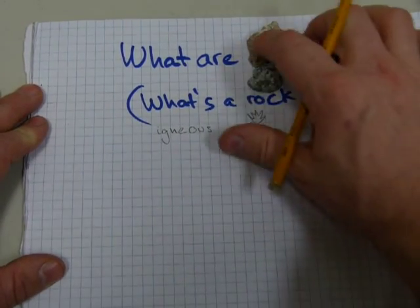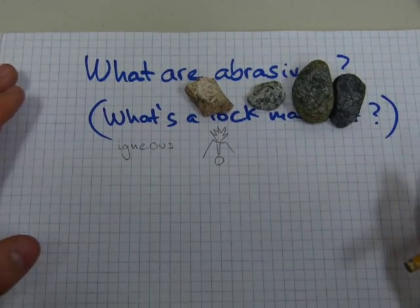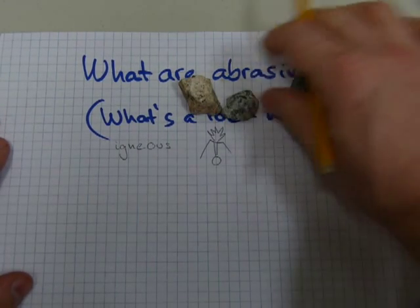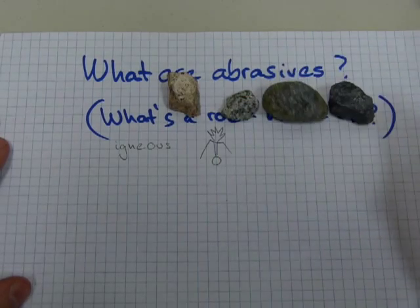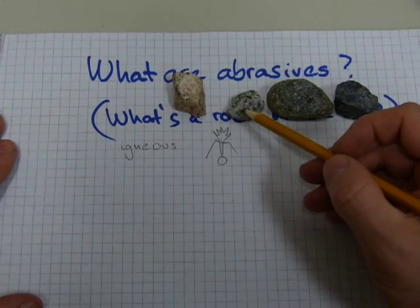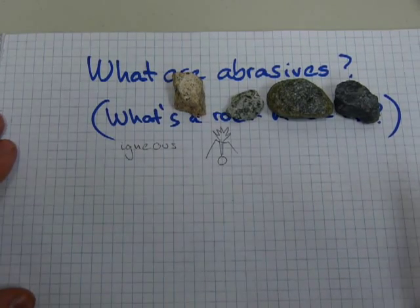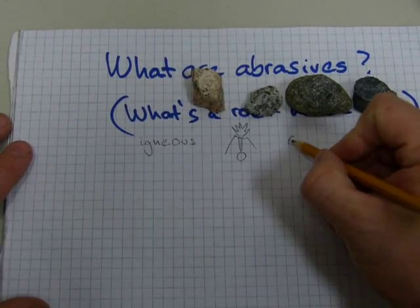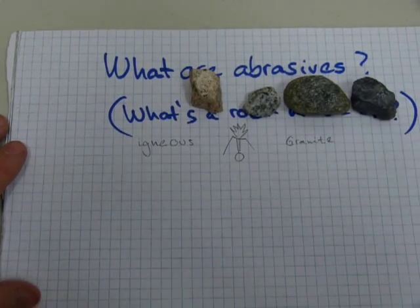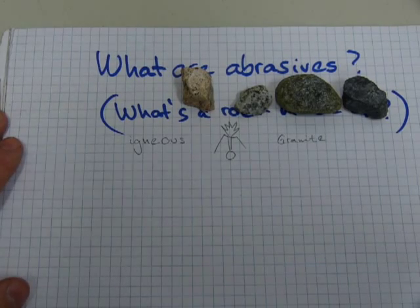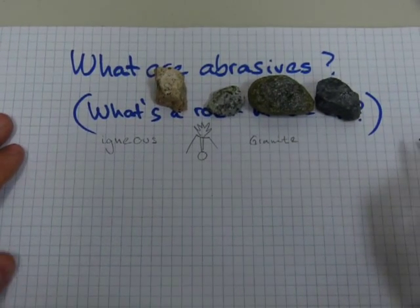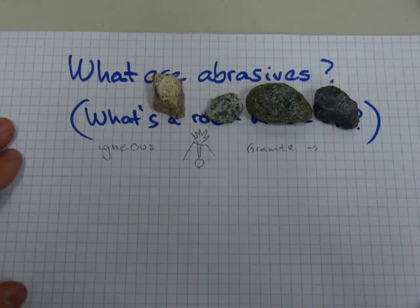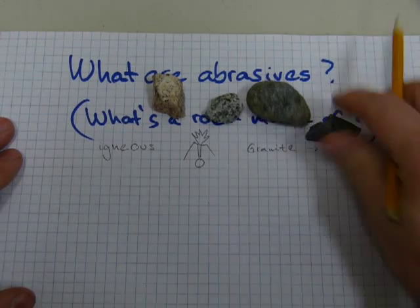As the lava solidifies it forms material with darker stuff and lighter stuff. This is all granite. Whatever comes out of the volcano, all of it is granite. As this is not a course in geology I'll make a couple of simplifications: granite has three kinds of chips or flakes in it. The very dark stuff is called mica.